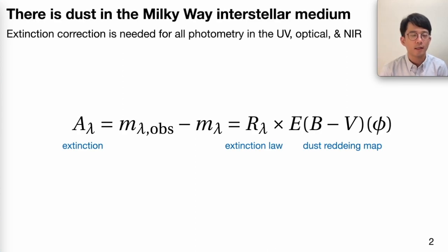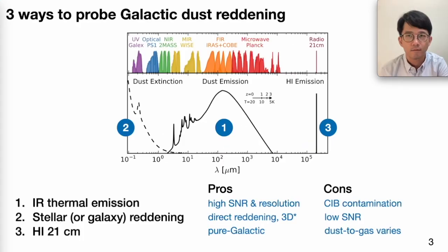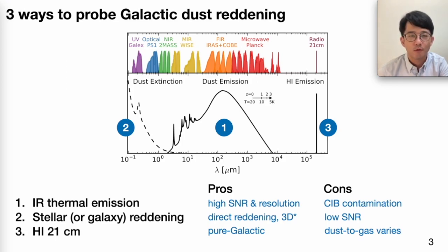Let's acknowledge the fact that there's dust in the Milky Way ISM pretty much everywhere. Because we live inside the Milky Way, extinction correction is needed for basically all extragalactic photometry from the UV to optical to the infrared. There are three main ways to probe dust reddening on the sky, or to make a galactic dust map, corresponding to the three spectral features on this plot.